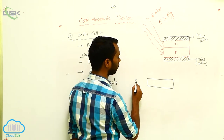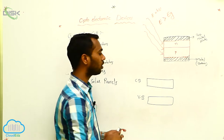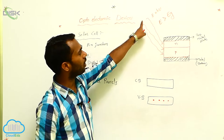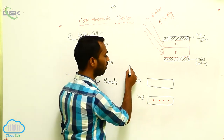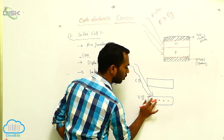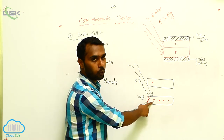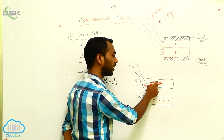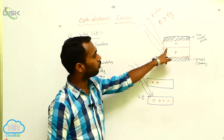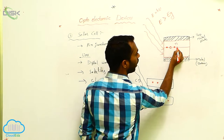We have a conduction band and a valence band. Electrons are present in the valence band. Whenever solar energy is incident on the PN junction diode, these electrons jump to the conduction band, automatically forming a hole. In this way, electron-hole pairs are formed.